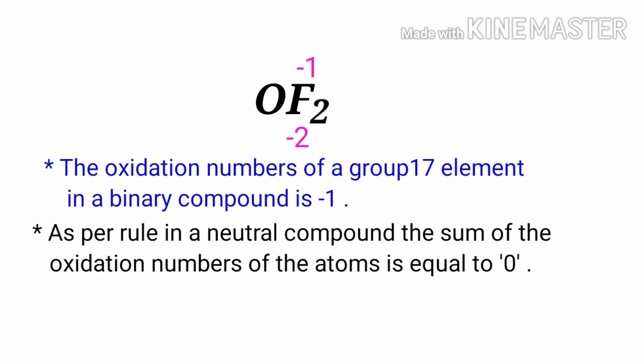As per rule, in a neutral compound, the sum of the oxidation numbers of the atoms is equal to zero. So the numbers along the bottom must add up to zero. So the number under O must be plus two.